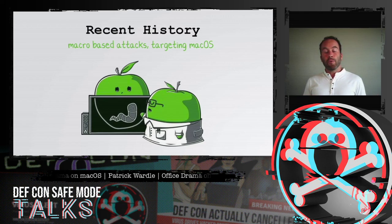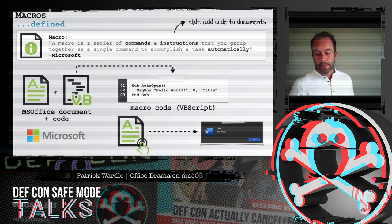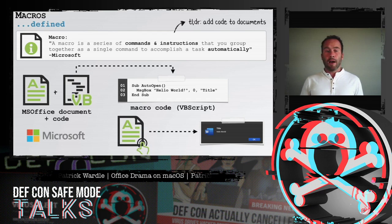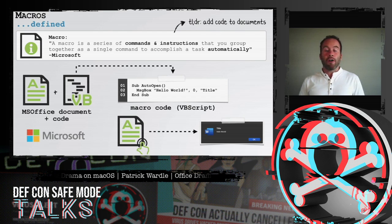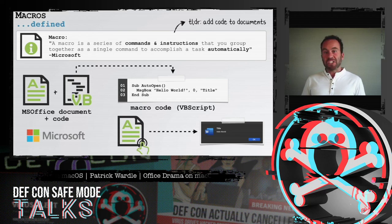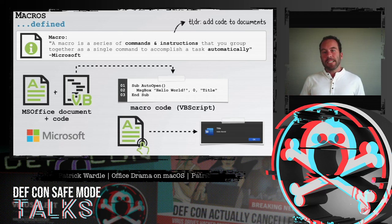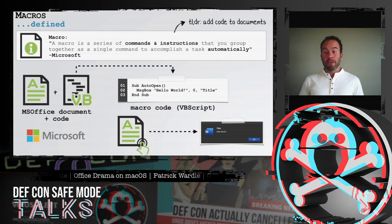We're going to start by looking at recent macro-based attacks targeting Mac users. First, you might be wondering: what is a macro? I've added the official Microsoft documentation on the slide, but in short, a macro is embedded executable code in Microsoft Office documents — it allows one to add executable code into a file, into a document. What I've done is insert a macro into a Word document that will display a pop-up that says "hello world."